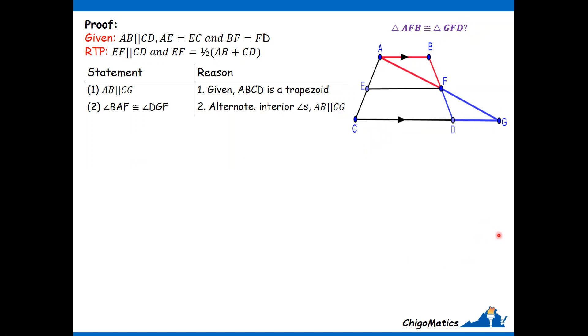The angle that I'm going to mark is angle BAF. This angle is congruent to angle DGF. These two angles are congruent because they are alternate interior angles. Then I look for another one. This angle is equal to this one, vertically opposite. So now I have two angles.